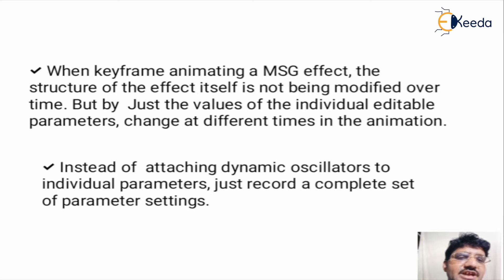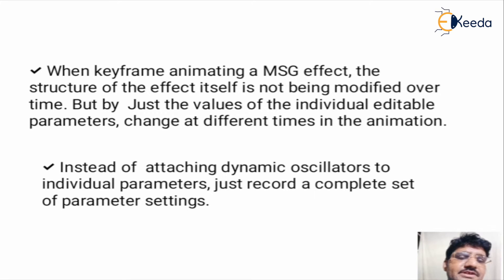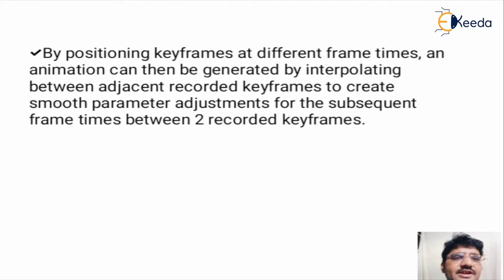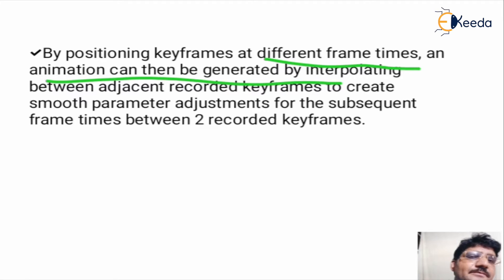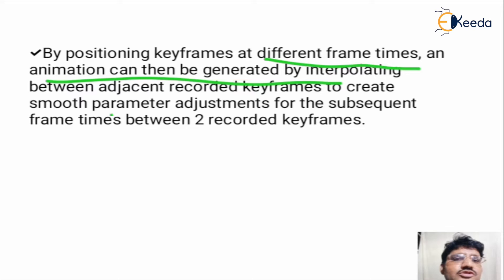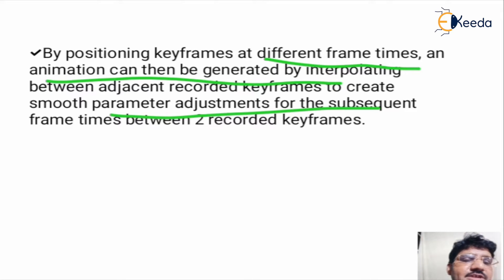But only the values of the individual editable parameters change at different times in the motion. Instead of attaching dynamic oscillators to individual parameters, in this method we just record a complete set of parameter settings. By positioning keyframes at different frame times, animations can then be generated by interpolating between adjacent recorded keyframes to create smooth parameter adjustments for the subsequent frame times between two recorded keyframes.